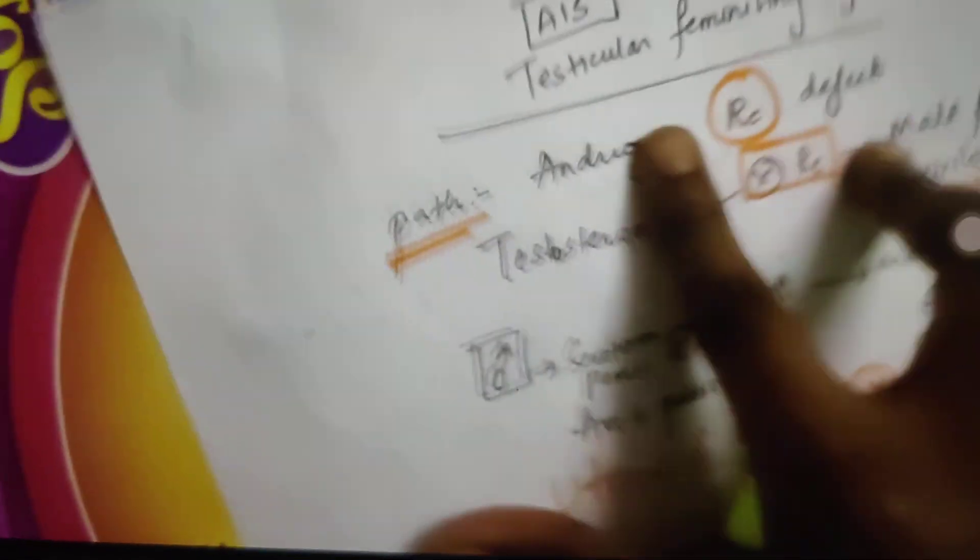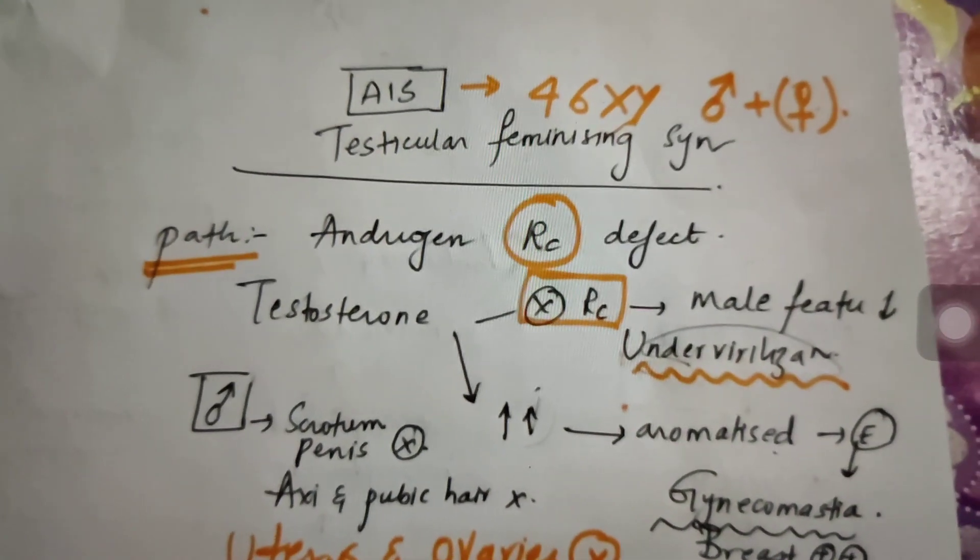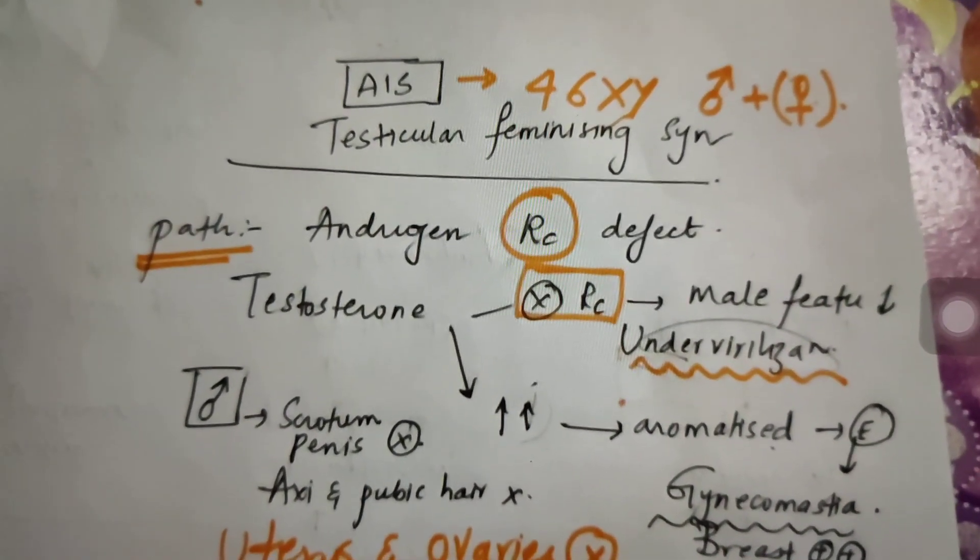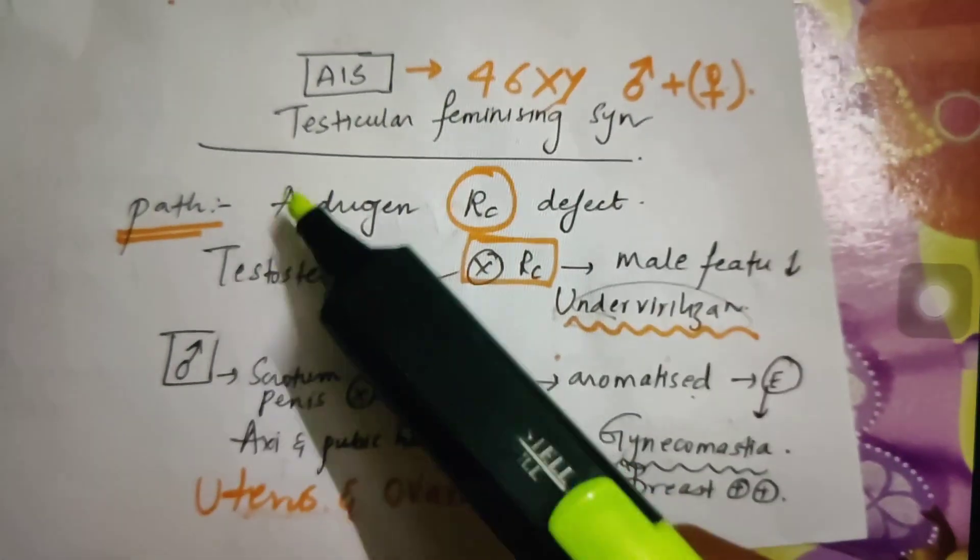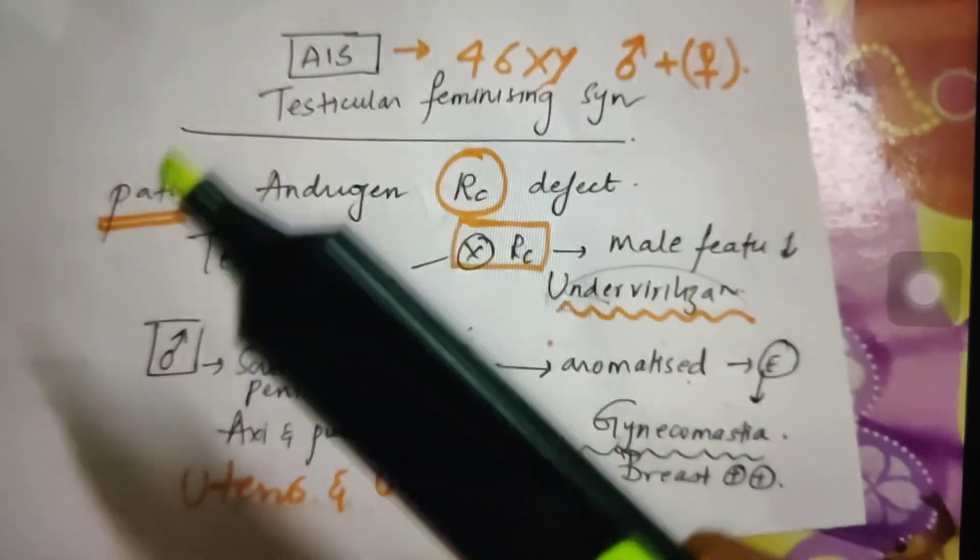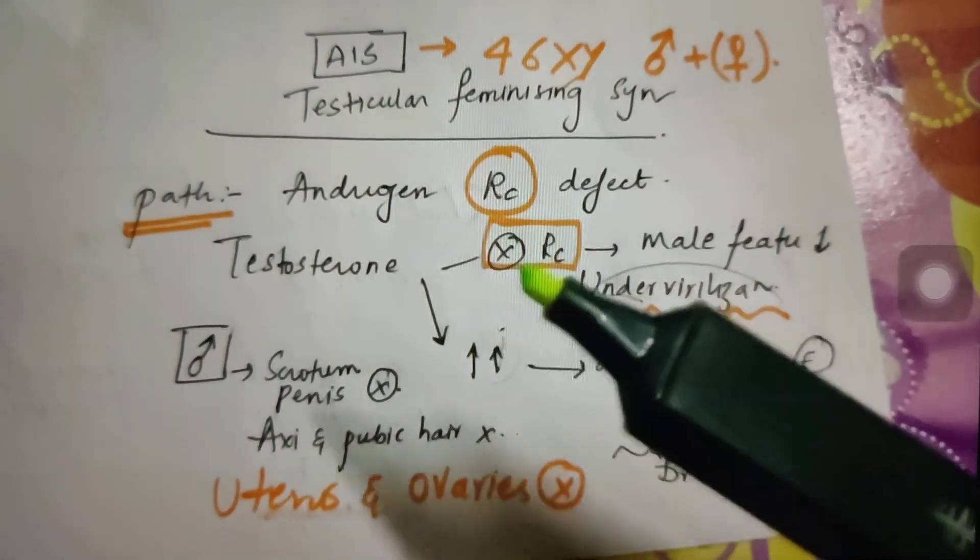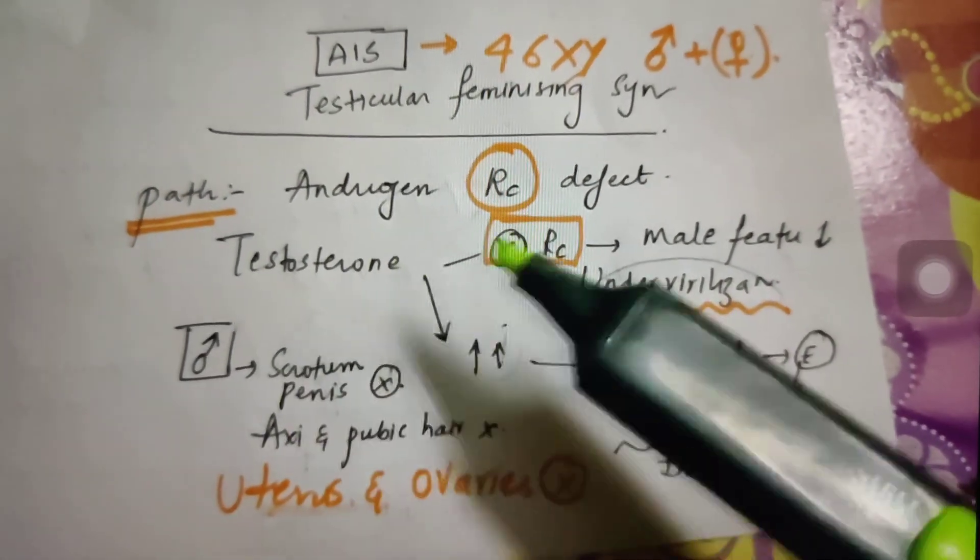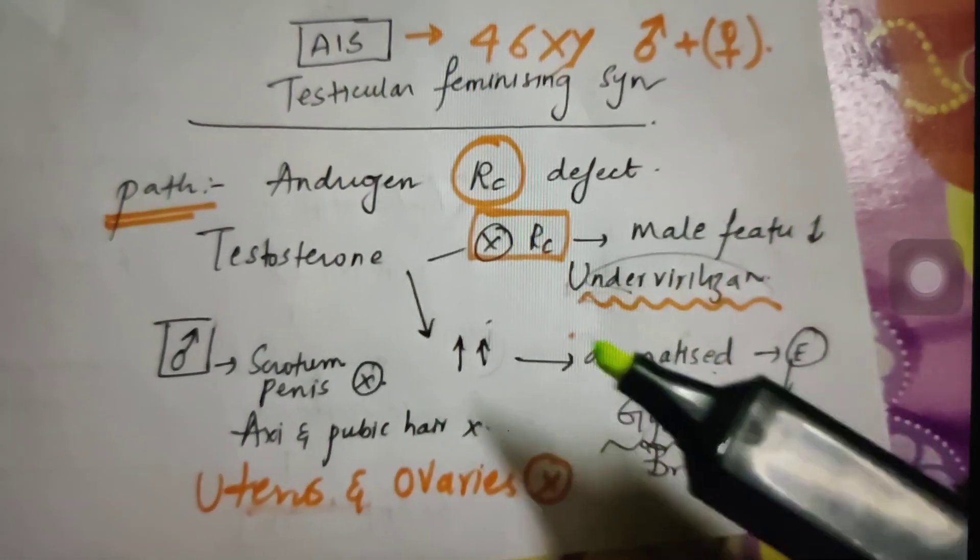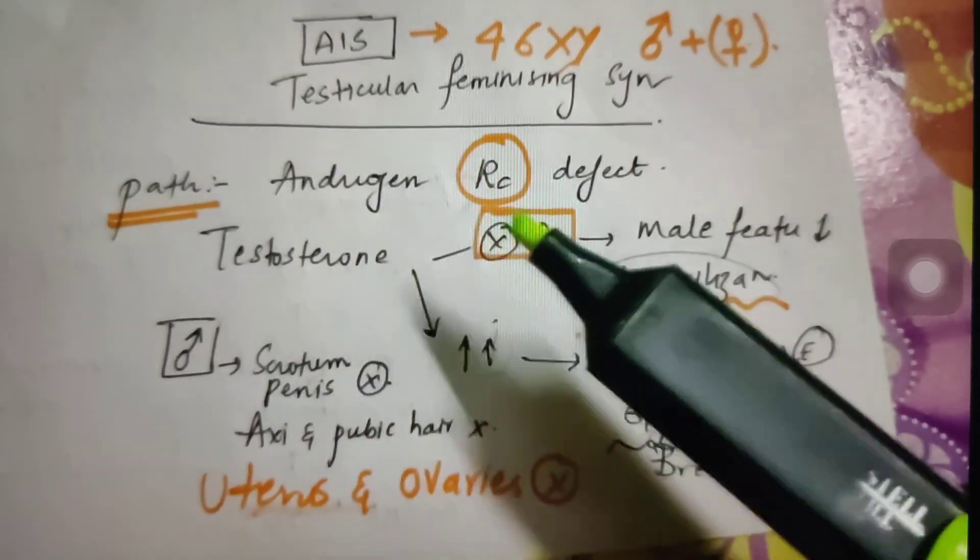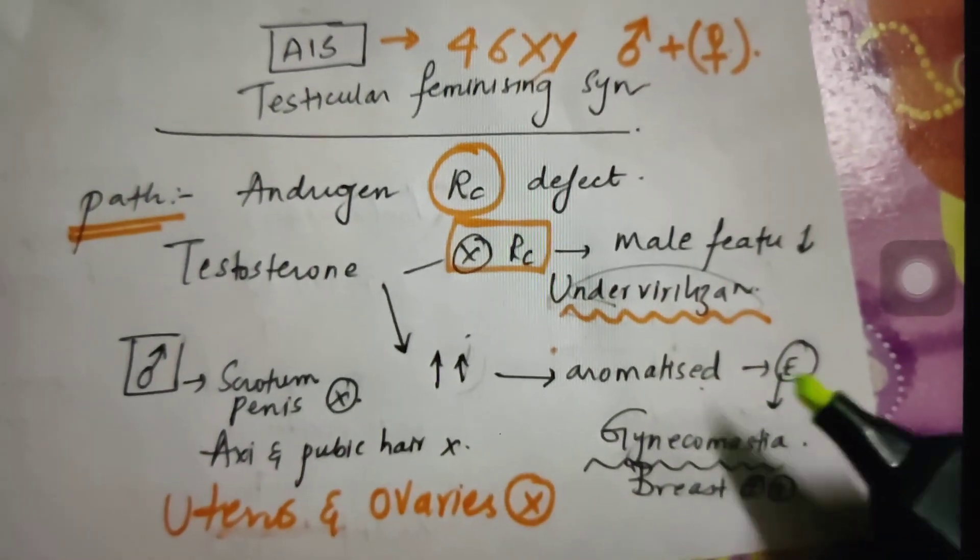Coming to AIS, androgen insensitivity syndrome. It is otherwise called testicular feminizing syndrome. It is having a karyotype of 46XY, that is a male patient with female characteristics. So the pathology behind AIS is androgen receptor defect. That is, the patient is having testosterone receptor defect. So testosterone cannot act on its receptor. The male features, that is virilization, decreases, so the patient presents with under-virilization. Whereas the testosterone, since it is not able to act on its own receptors, gets accumulated and gets aromatized to estrogen, converted to estrogen.